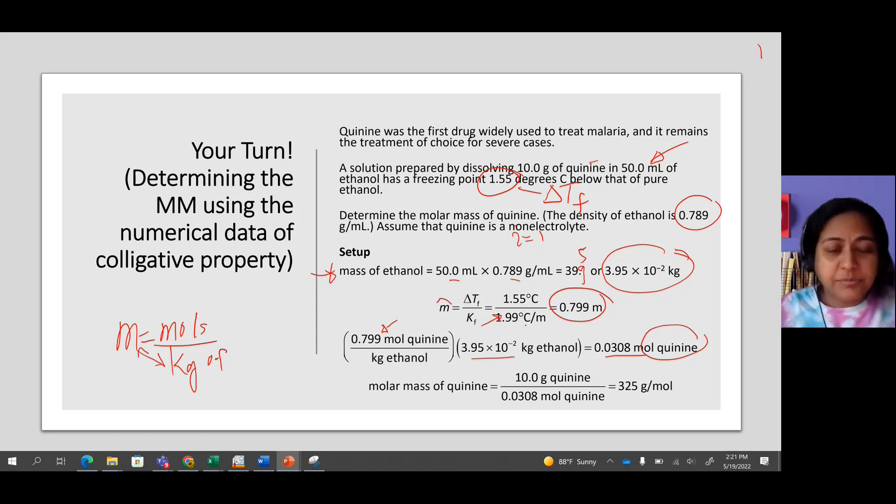We have the moles, and what else should we have? We need the grams. Yes, it is given, so we divide that in order to find the molar mass of the solute, which is quinine.